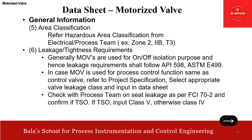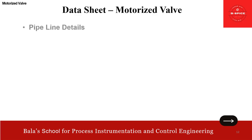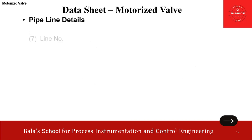Check with the process team on the seat leakage as per FCI 70 part 2, and confirm with TSO. Otherwise, input class 4. TSO means class 5. If the MOV function is similar to a control function — meaning they want to use it for process control function — only then this requirement applies. Otherwise, just go with API 598. Now we cover the general section and move on to the pipeline. Line number — refer P&ID, put it into the project and input.